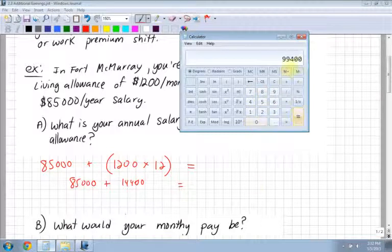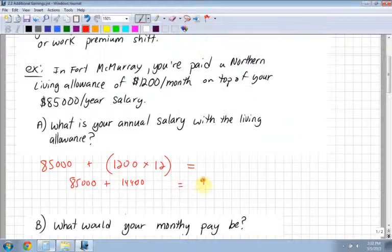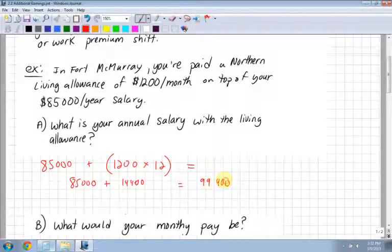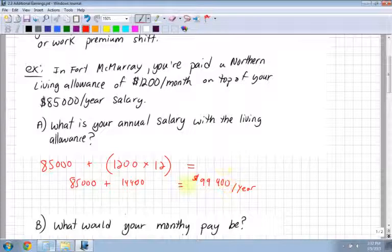So $85,000 plus $14,400 added on to my original wage—you're making $99,400 for the year. Keep in mind, we're not looking at any taxes yet. These are gross incomes before taxes.